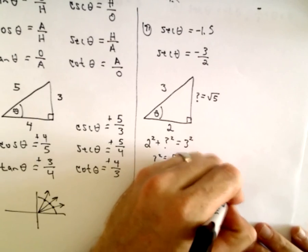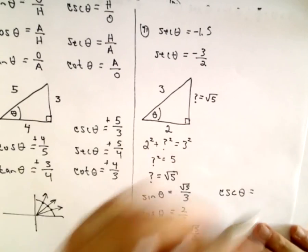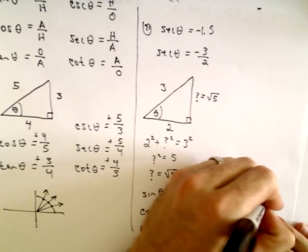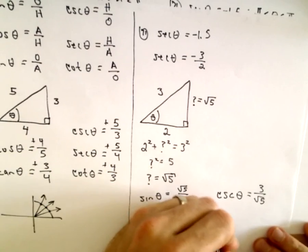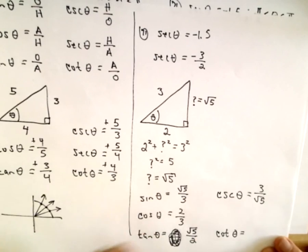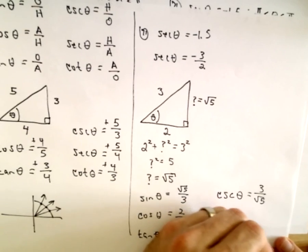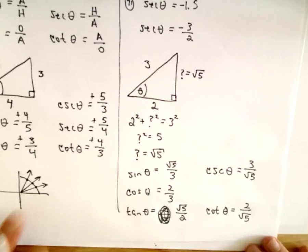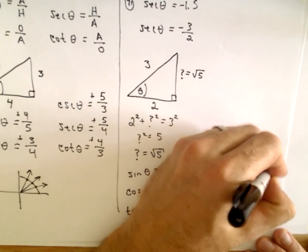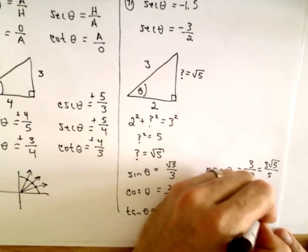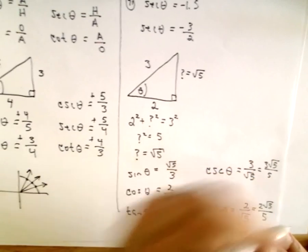So we want to get cosecant of theta. Well, now I can just flip. That's going to be 3 over root 5. We already know secant theta. That was given. Cotangent of theta, that's going to be 2 over root 5. You could rationalize these denominators if you want to multiply top and bottom by square root of 5. So you've got 3 root 5 over 5 and 2 root 5 over 5.